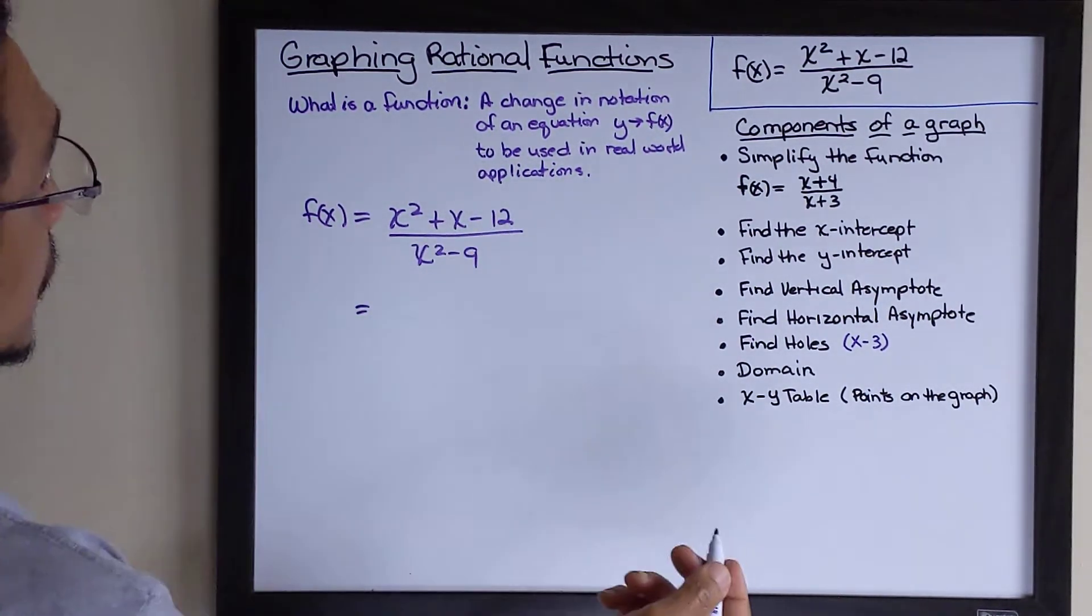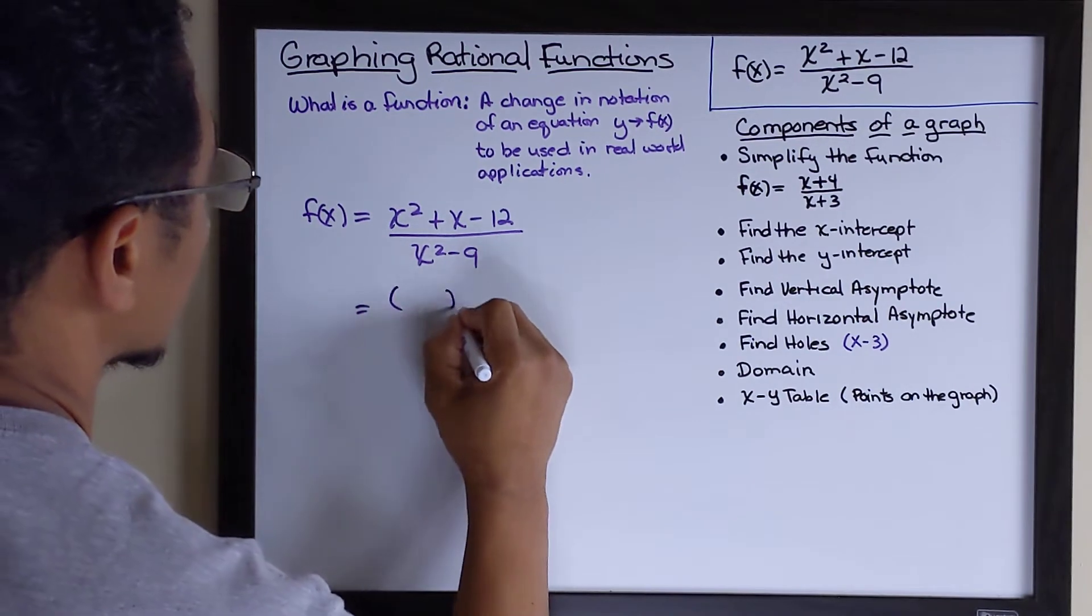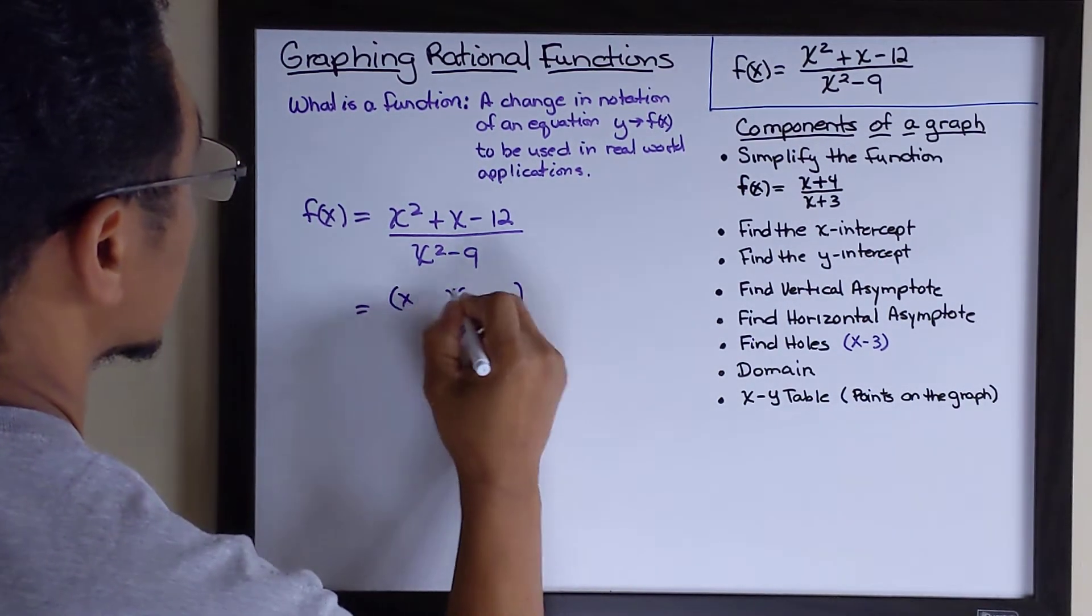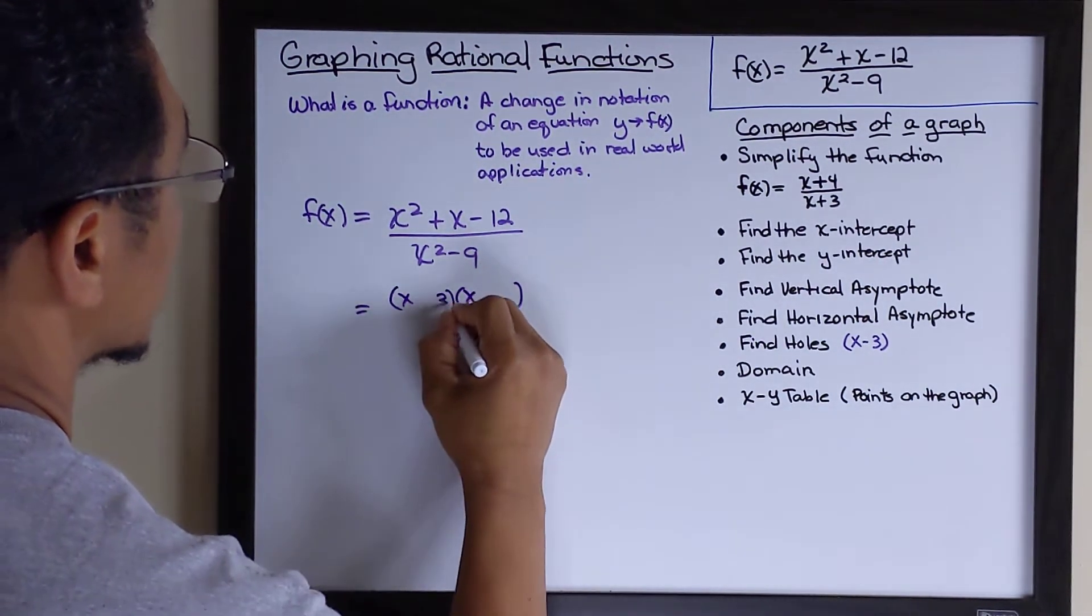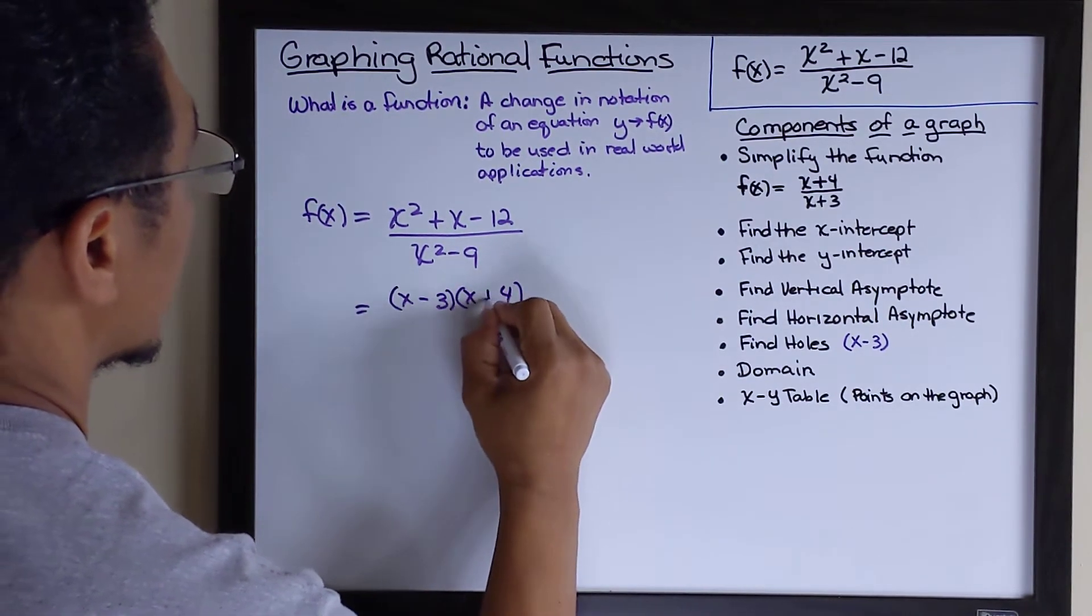So, we're going to factor the numerator. We're going to use a is equal to one factoring. We're going to get x, x. This would be 3, 4.